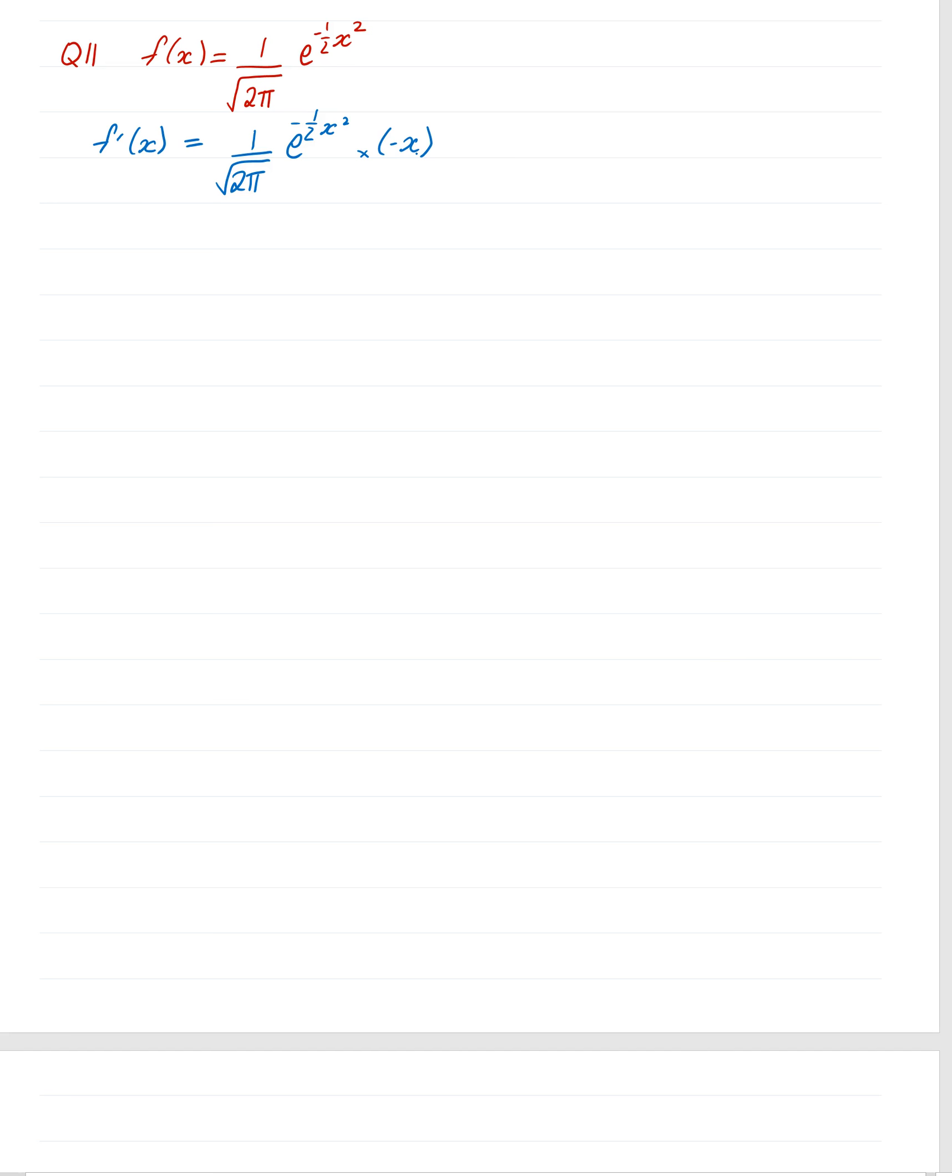Now we want to solve for when this equals 0. We know that this cannot be 0, this is just a constant. So really, the only value that would make this first derivative equal to 0 is 0 itself. When x is 0, 0 times anything is 0. So we've got x equals 0 is when a possible stationary point can occur.